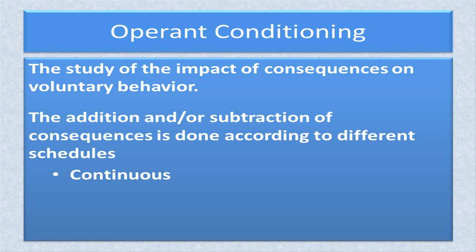The first category is continuous, which means that a consequence is added or subtracted after every target behavior is emitted. The second is intermittent, which means that a consequence is not always added or subtracted after every target behavior is emitted.